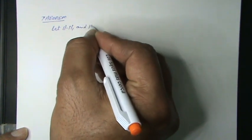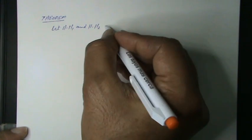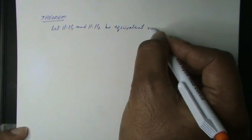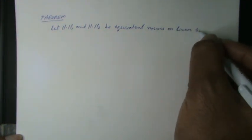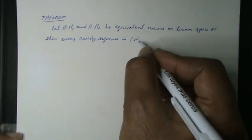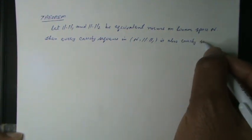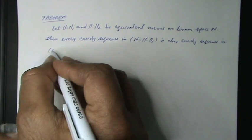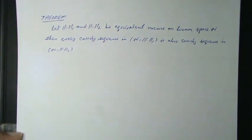Let norm 1 and norm 2 be equivalent norms on a linear space N. Then every Cauchy sequence in the normed space N with norm 1 is also a Cauchy sequence in the normed space N with norm 2, and conversely.